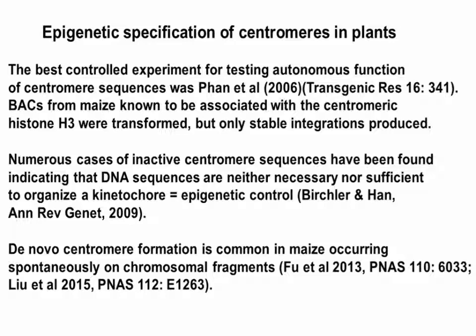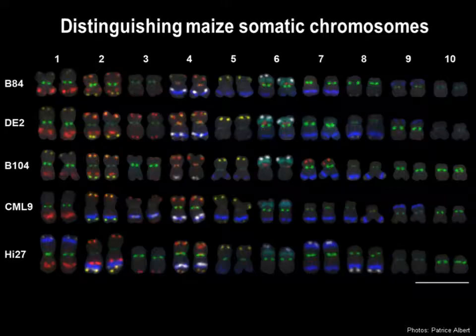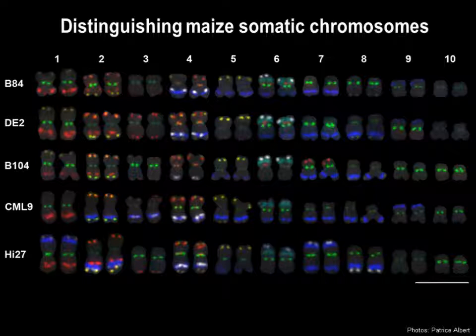We and others have found that centromeres can be formed de novo on chromosome fragments over positions with unique DNA that do not have the canonical sequences present. This is an issue that needs to be understood in making artificial chromosomes. As background, I will introduce what we call maize chromosomics. We developed a way to distinguish each of the ten chromosomes of maize using FISH and MCFISH tags, so we can follow chromosomes and know which chromosome we're working with in any particular karyotype preparation.